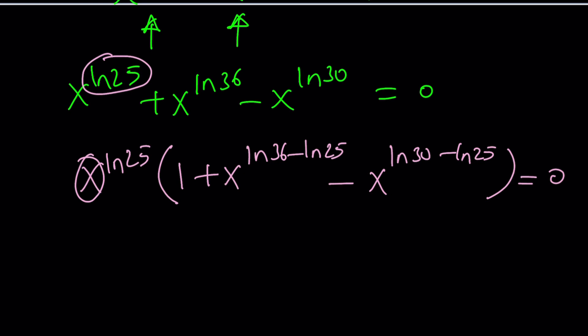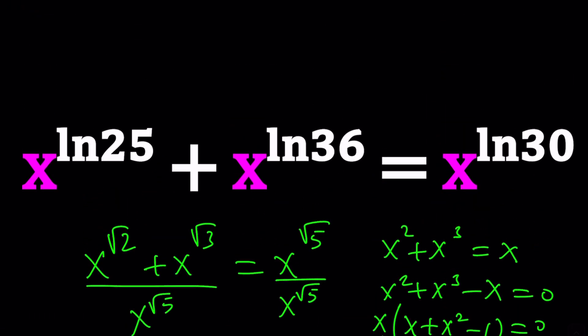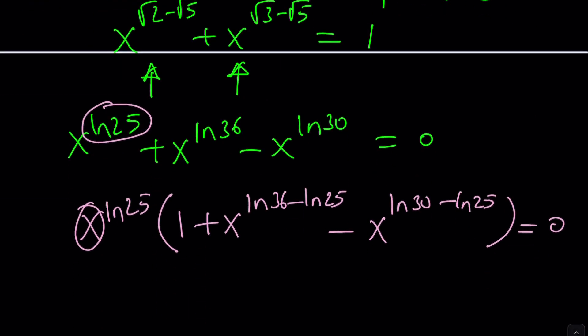At least we know at this point that x equals 0 is a solution. You could probably tell that. Looking at the original problem, 0 plus 0 equals 0. So you could get that real quick.